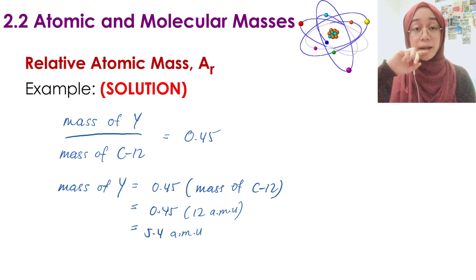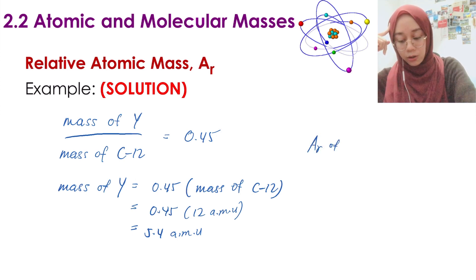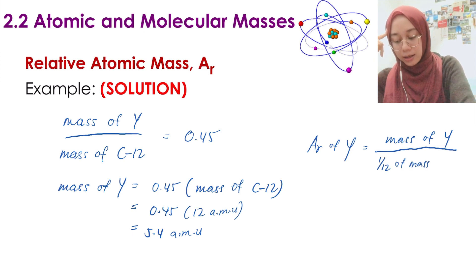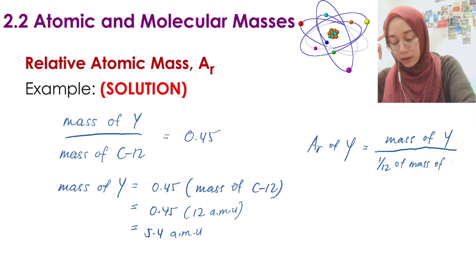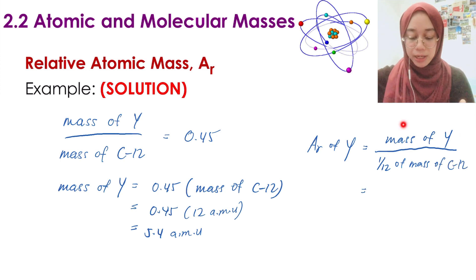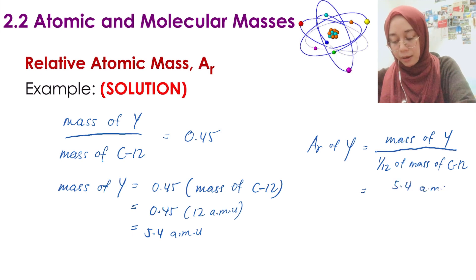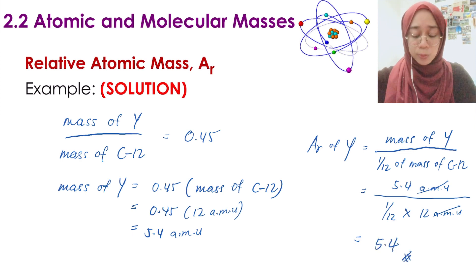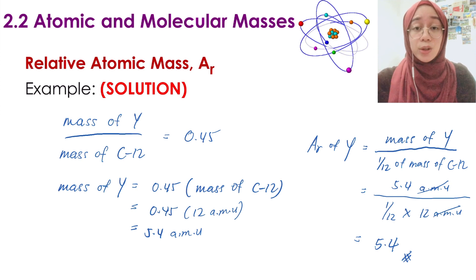The mass ratio of Y compared to carbon-12 is 0.45. We already know the mass of one carbon-12 atom is 12 AMU. So the mass of Y equals 0.45 multiplied by the mass of carbon-12, which is 12 AMU. Therefore, 0.45 × 12 = 5.4 AMU.